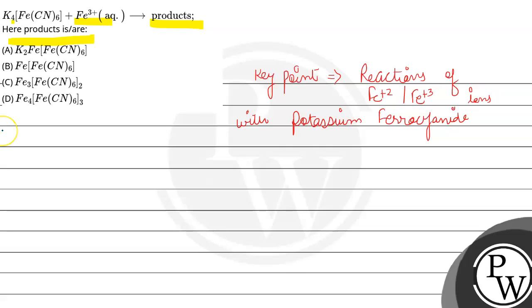So when Fe plus 3 ion reacts with K4FeCN6, that is called potassium ferrocyanide.